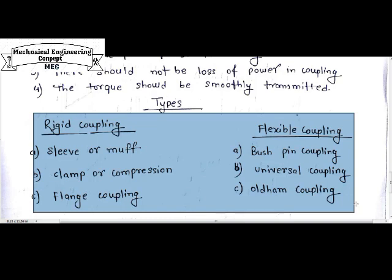Rigid coupling can be divided into three parts: sleeve or muff coupling, clamp or compression coupling, and flange coupling. Flexible coupling can be divided into three parts: bush pin coupling, universal coupling, and Oldham coupling. I will discuss each of them in upcoming videos - the design procedure, how to calculate and design each type of coupling.